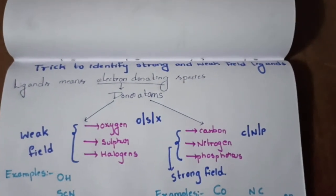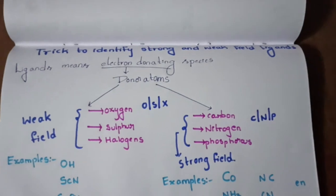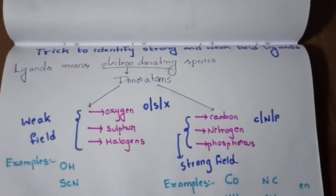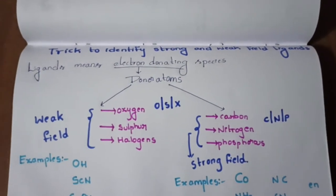In valency bond theory and crystal field theory, we need to know how to identify strong field ligands and weak field ligands.